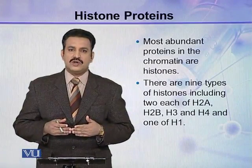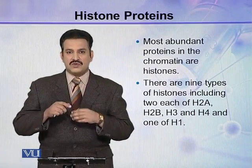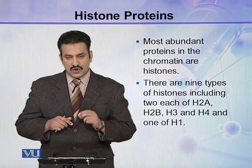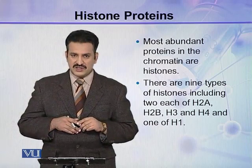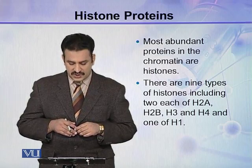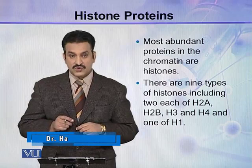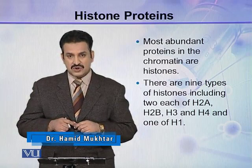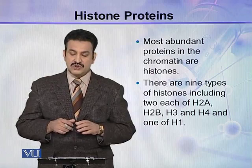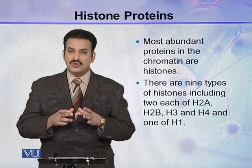As you know, in a chromosome or in the chromatin, the DNA molecule is wound around proteins which are histone proteins. In the chromatin, the most abundant type of proteins present are histones. There are nine types of histone molecules and they include two molecules each of H2A, H2B, H3, and H4 histone, and one molecule of H1. So these are nine molecules present in a single nucleosome.